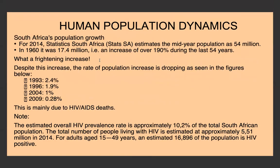For South Africa's population growth: in 2014, Stats SA estimated the mid-year population at 54 million — today around 59 million. In 1960 it was 17.4 million, so between 1960 and 2014 there was an increase of over 190%. However, we can see the rate is slowing: in 1993 it was a 2.4% increase, but by 2009 only 0.28%, largely due to HIV/AIDS deaths.